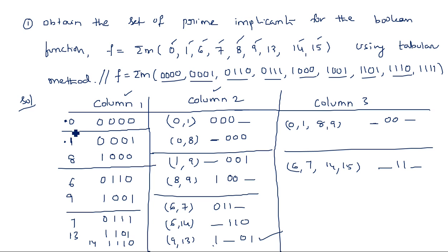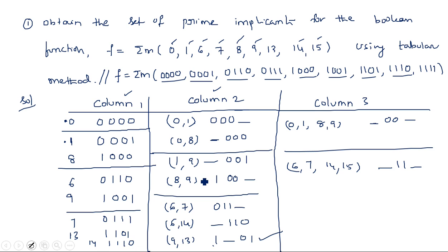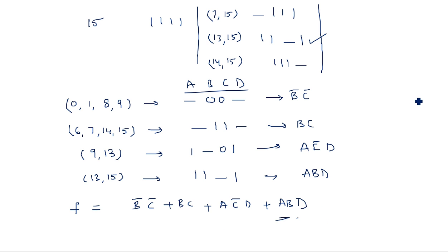In summary, write the given minterms in Column 1 with their binary representations, grouped by number of 1s. In Column 2, map adjacent groups by replacing the differing bit with a dash. Continue to Column 3 and further columns while possible. Finally, ensure all minterms in the question are covered by the prime implicants; if not, take the missing terms from the previous column. This is the Quine-McCluskey or tabular method.